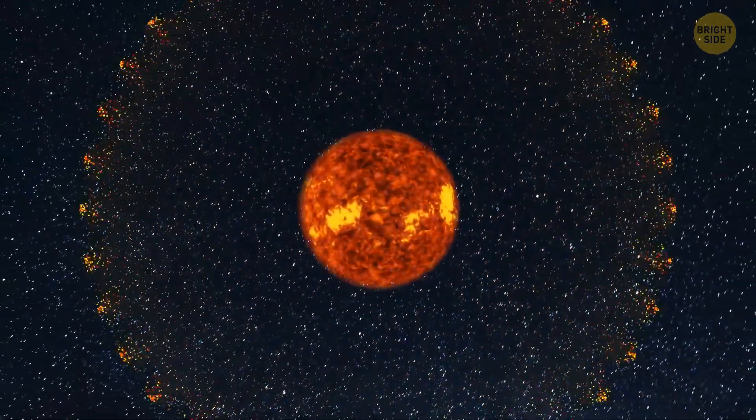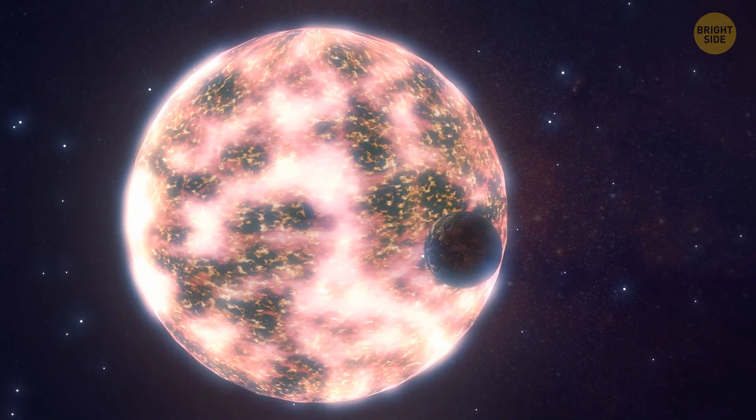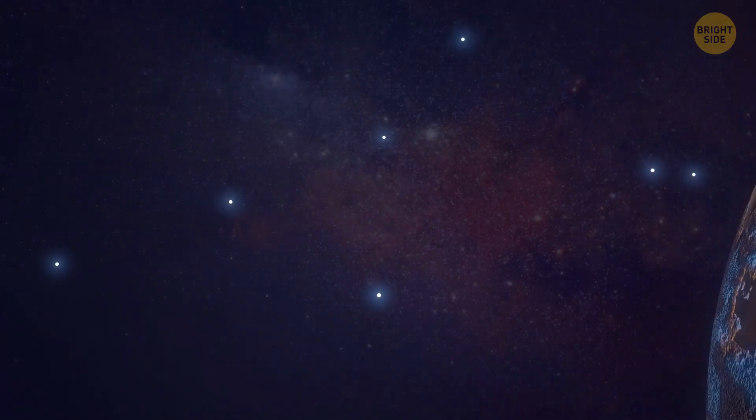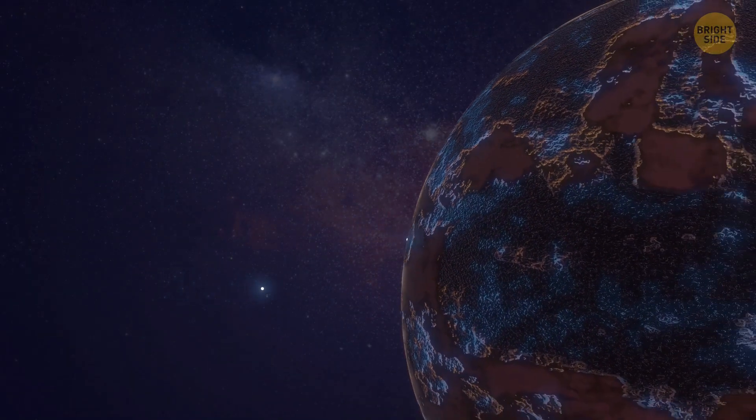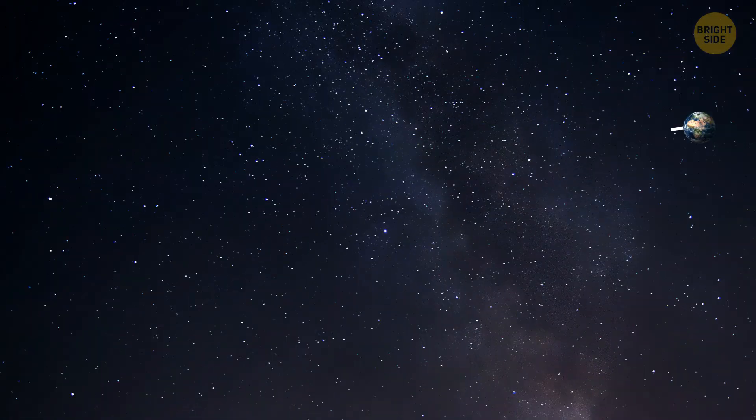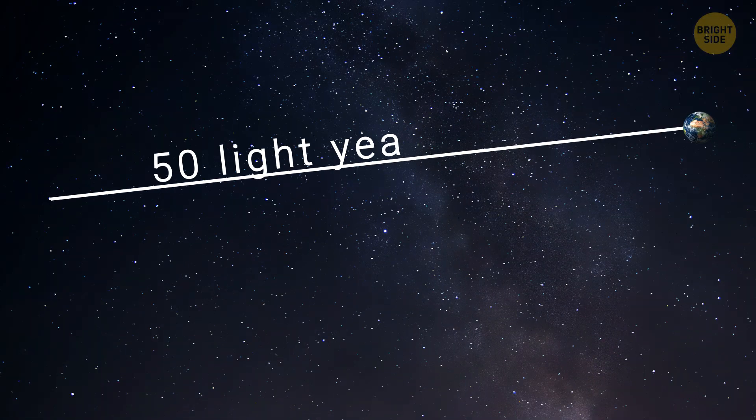But this heavy planet, LHS-3154b, exists. Now, this mysterious planet is 13 times heavier than our Earth. It's similar in size to Neptune. It's about 50 light-years away from us in the Hercules constellation.